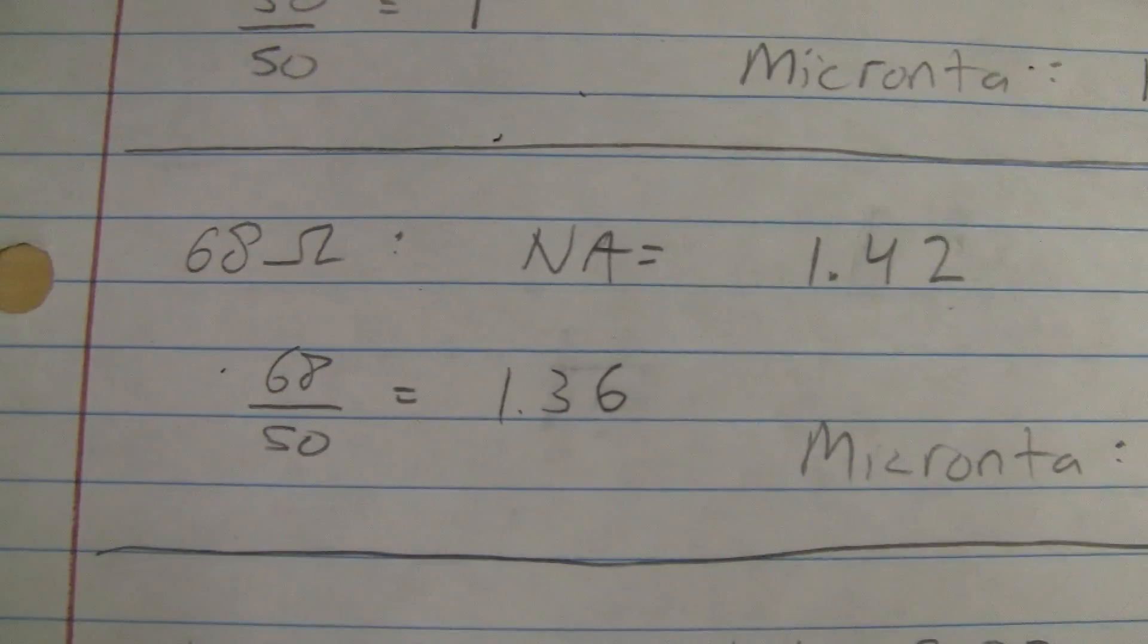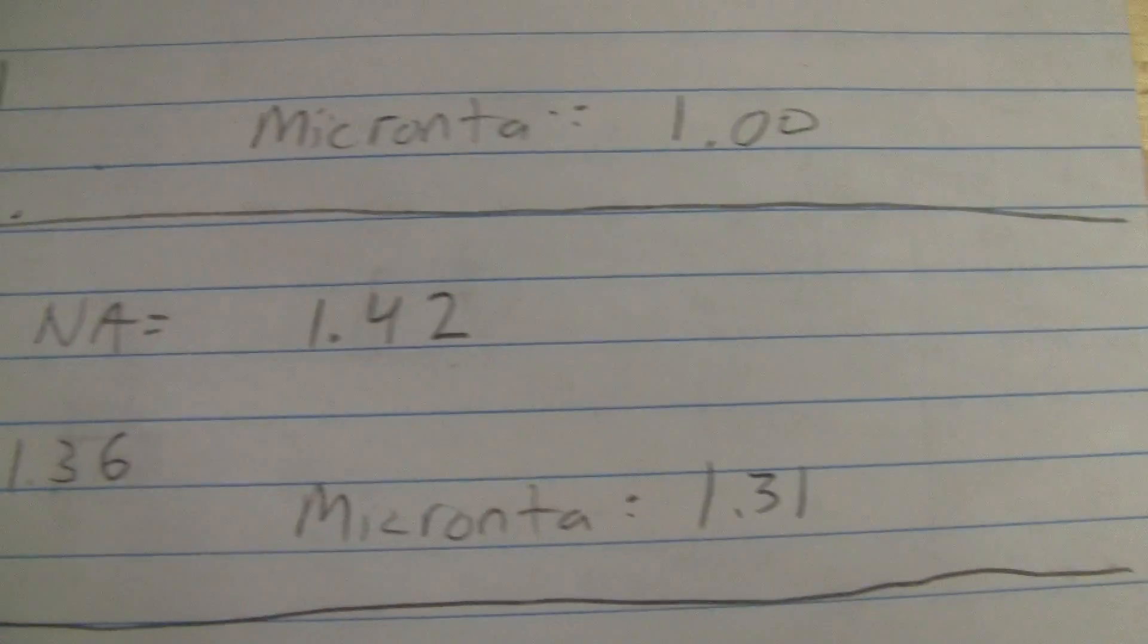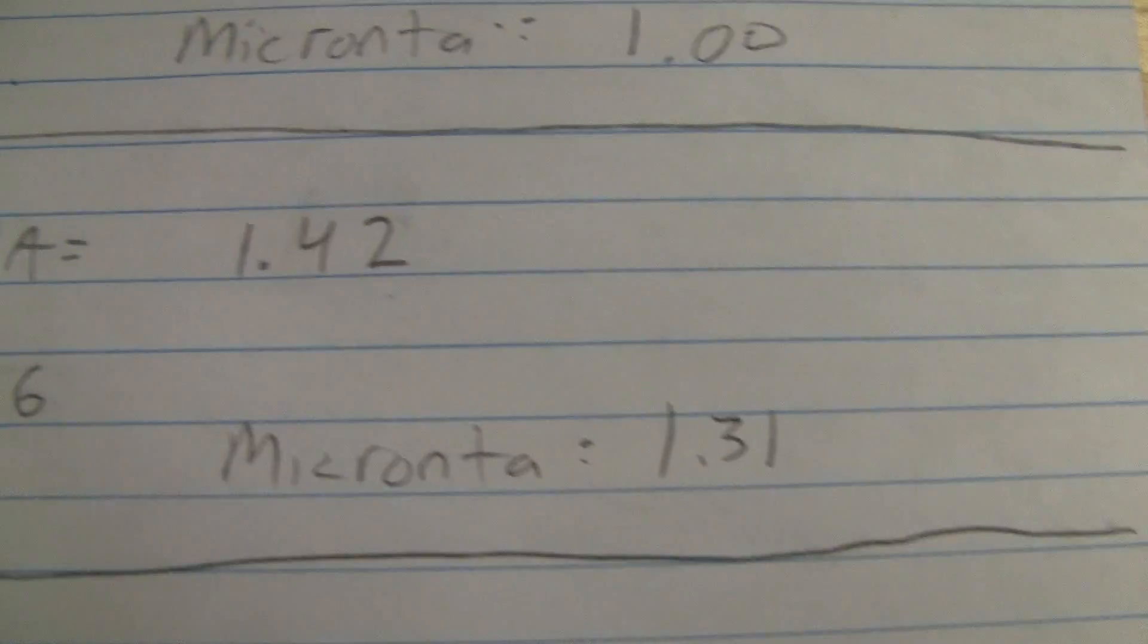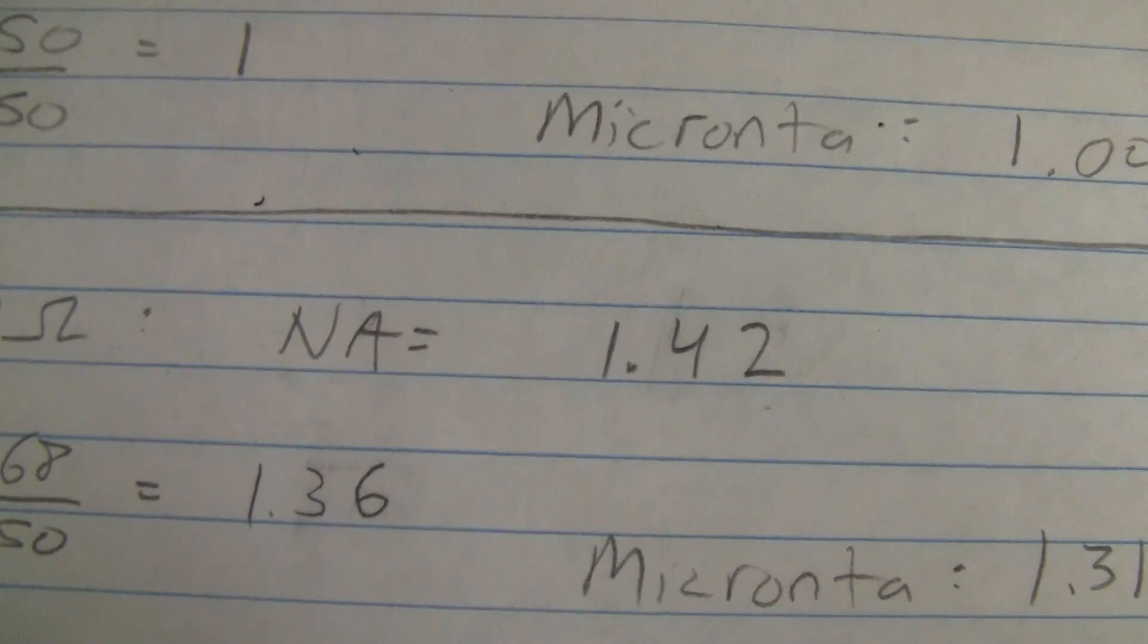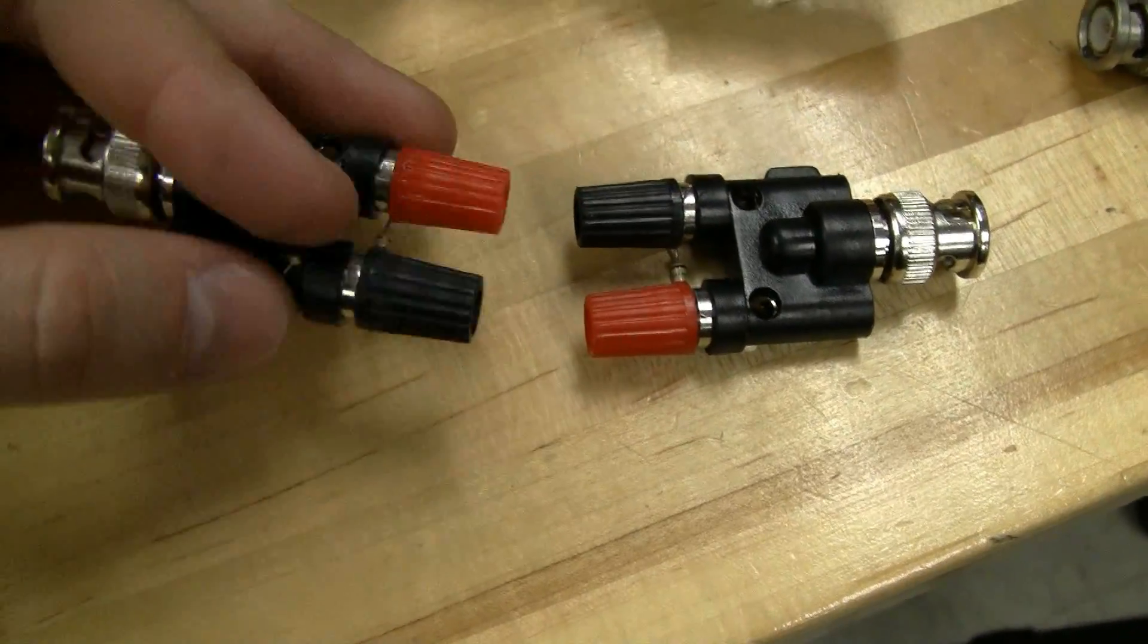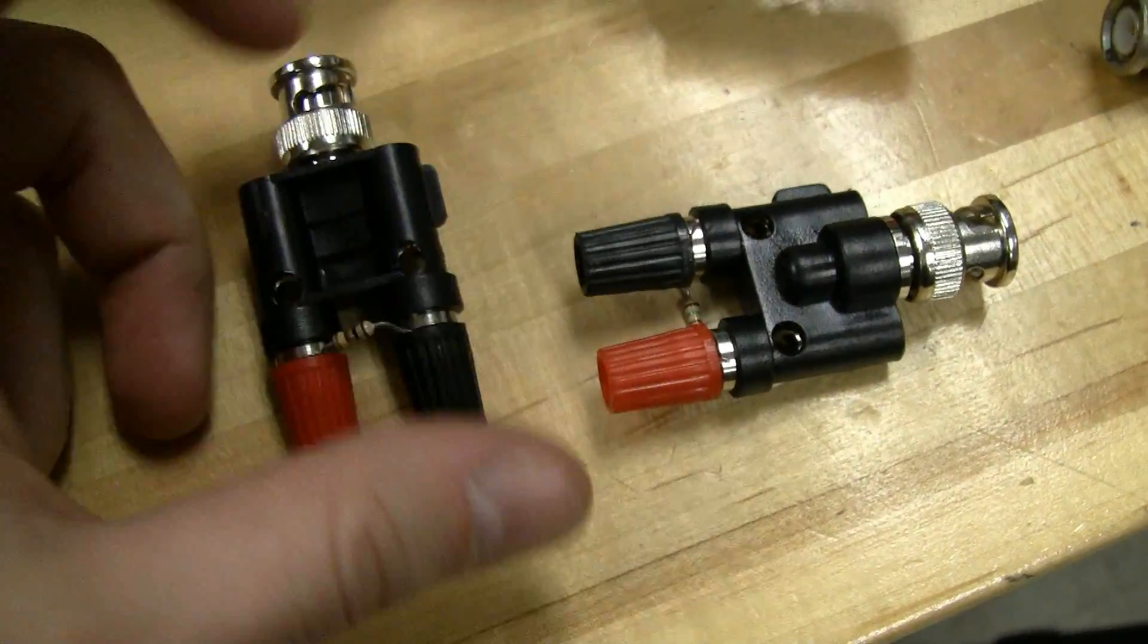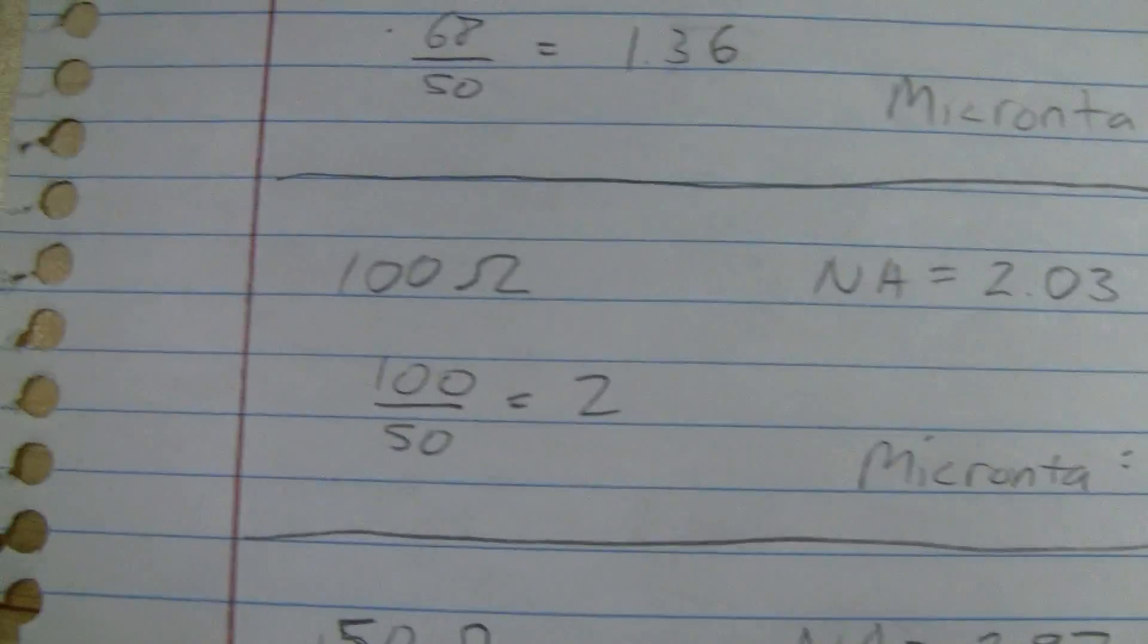Next is 68, we've got expected of 1.36, network analyzer measured 1.42, and the Micronta measured 1.31. The network analyzer's a little bit farther off than the other measurements, but that could just be due to the actual value of the resistor being a little bit different than the nominal. I didn't measure these with a multimeter, so they might be off by a little bit.